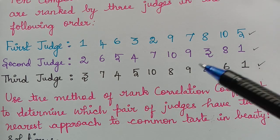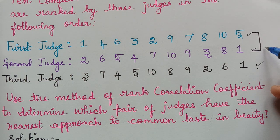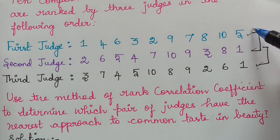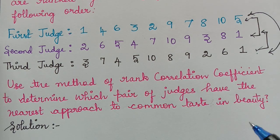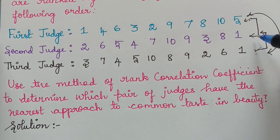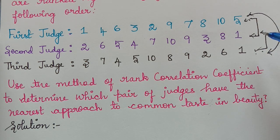Now, we have to use the method of rank correlation coefficient to determine which pair of judges have the nearest approach to common taste in beauty. That is, we have to find the rank correlation between the first and second judge, then between the second and third judge, and then between the first and third judge.